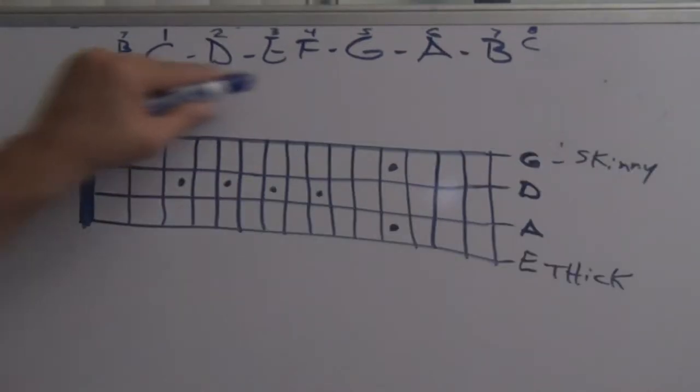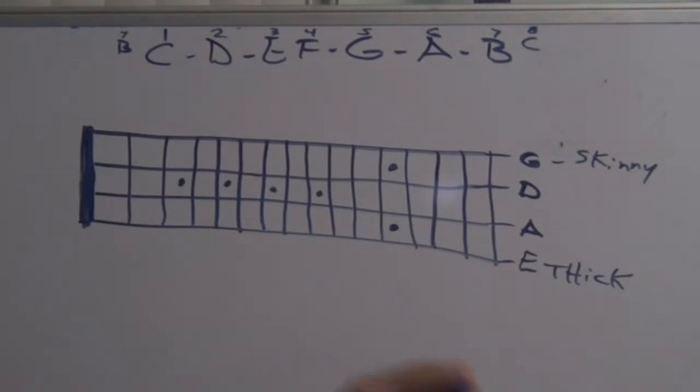We got here the scale, the C scale. Remember, the C scale is the easiest one because it doesn't have any sharp or flat. By the way, if you need to rewind to understand the video, play it again, rewind it again until you understand what I'm talking about. I advise you, rewind again, play it again and again until you understand. It's gonna help you a lot.